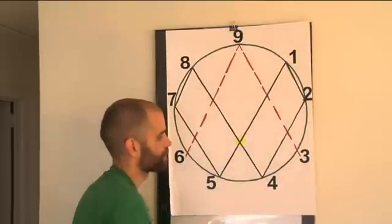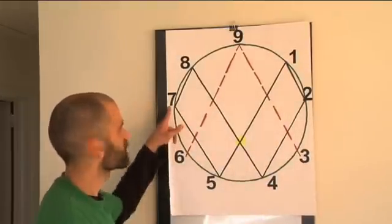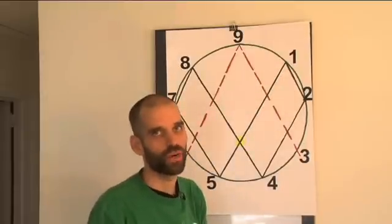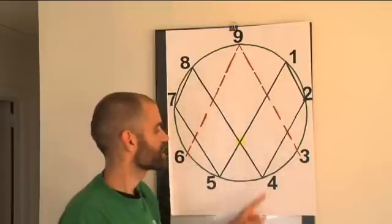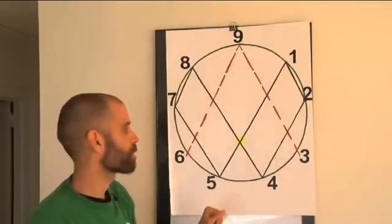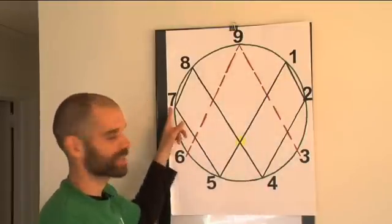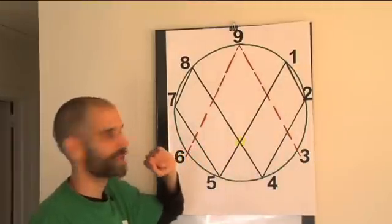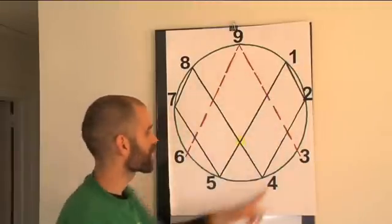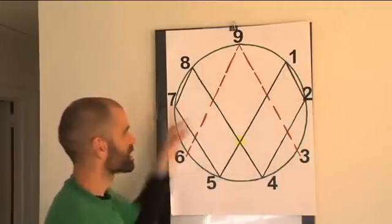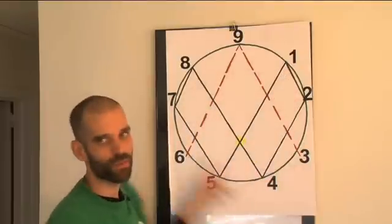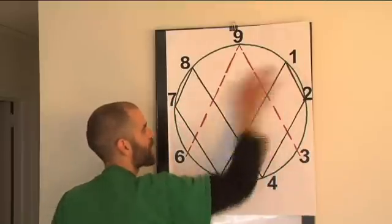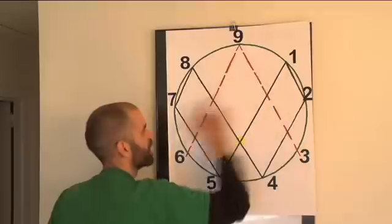Remember I said 3 and 6 here are my field. 1 plus 3 is 4, 4 plus 3 is 7, 7 plus 3 is 10 which comes back to 1. 10 plus 3 is 13 which comes back to 4, 13 plus 3 is 16, 16 plus 3 is 19 back to 1. No matter how far I go, if I keep adding 3's, it's the same pattern: 1, 4, 7. And notice these numbers are as far triangulated from each other as possible.